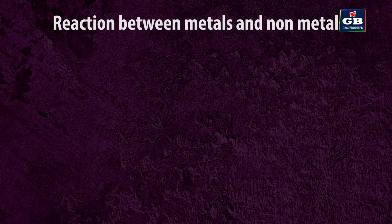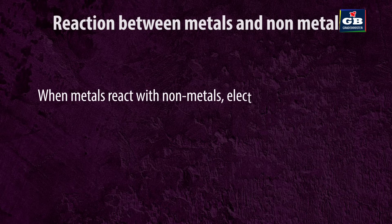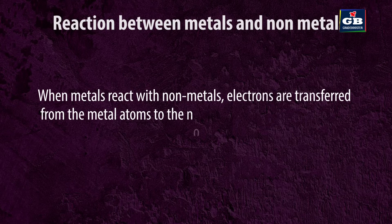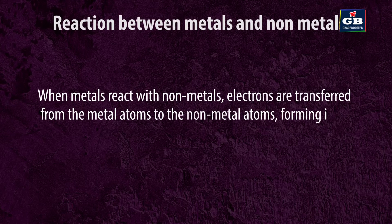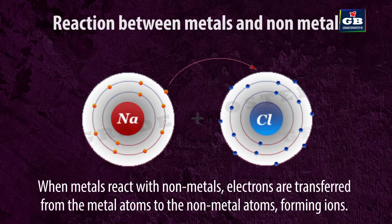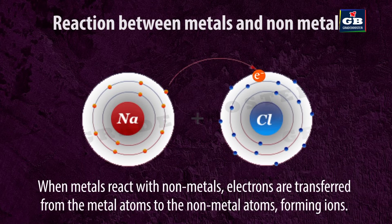Reaction between metals and non-metals: When metals react with non-metals, electrons are transferred from the metal atoms to the non-metal atoms, forming ions. The resulting compound is called an ionic compound.